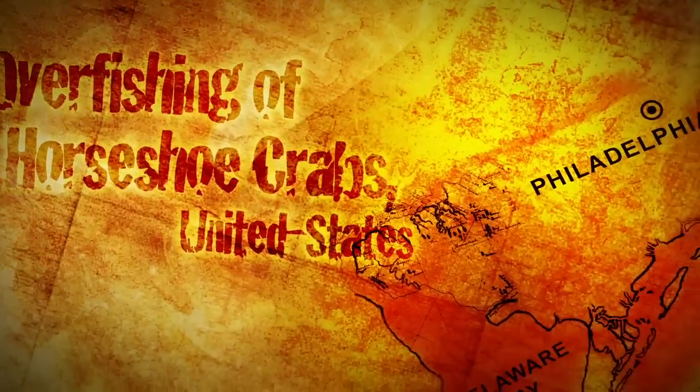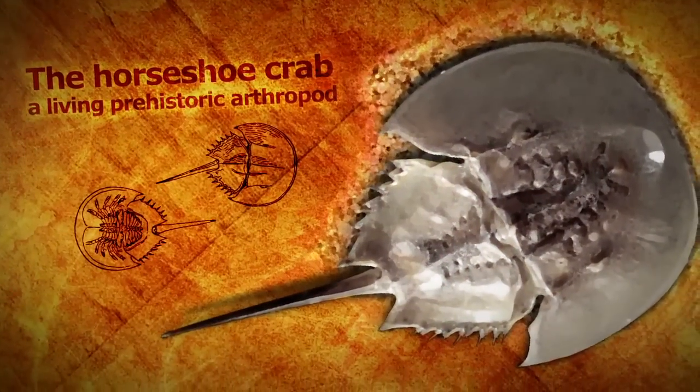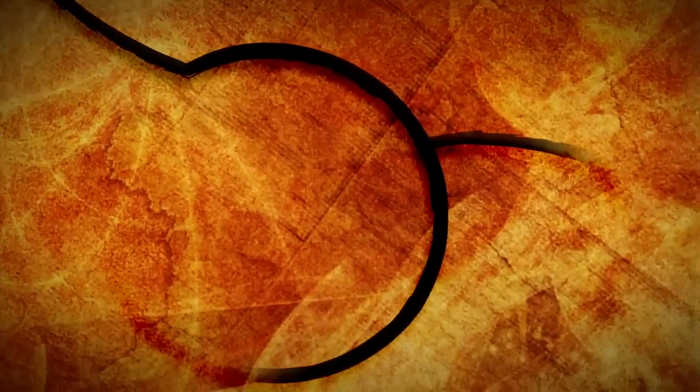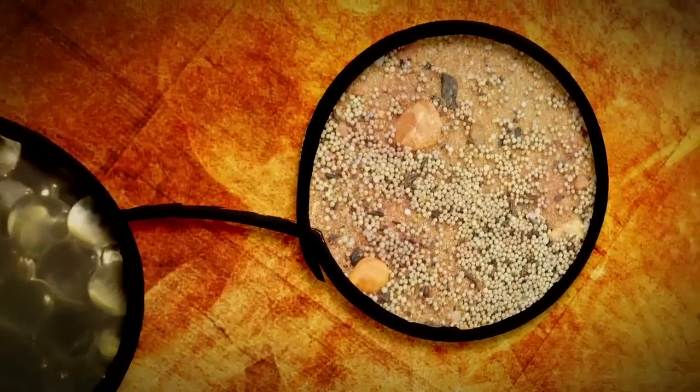In the Delaware Bay, researchers have found a strong link between the Red Knot Rufa and the horseshoe crab, a living, prehistoric arthropod. The horseshoe crab's eggs are an important source of food for Red Knot Rufa.